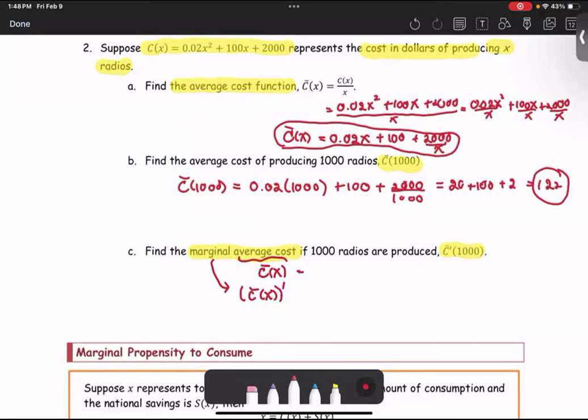C̄(x) is 0.02x + 100 + 2000/x. We're going to rewrite the last term in power form: 2000 times x^(-1). Another form is 0.02x + 100 + 2000x^(-1), to get ready to find the derivative.